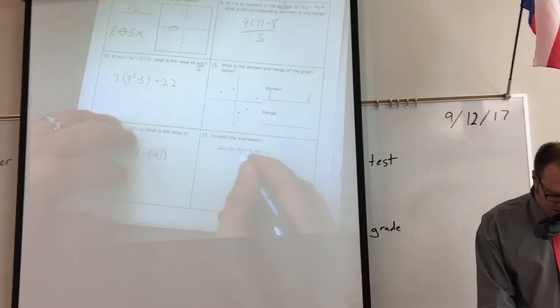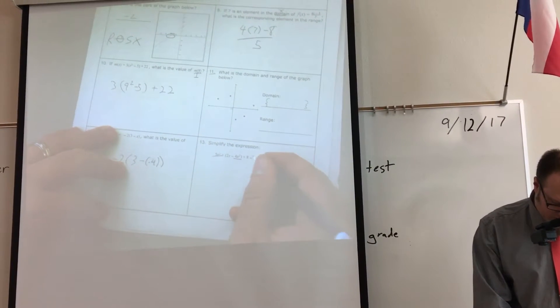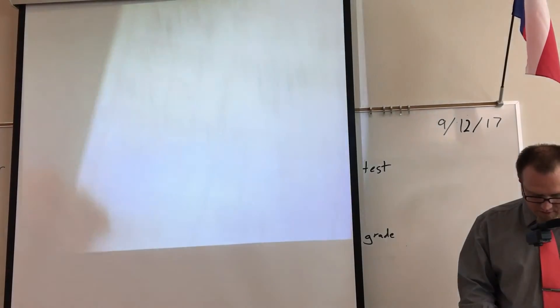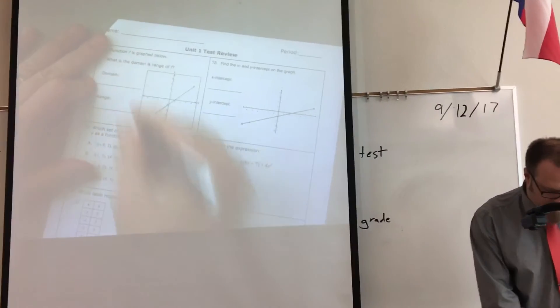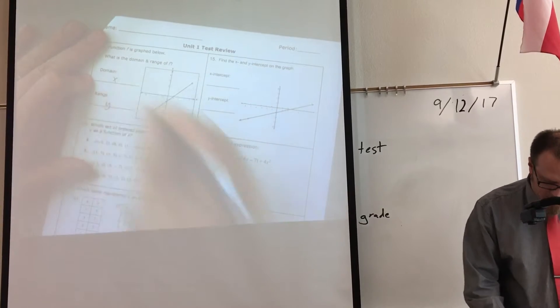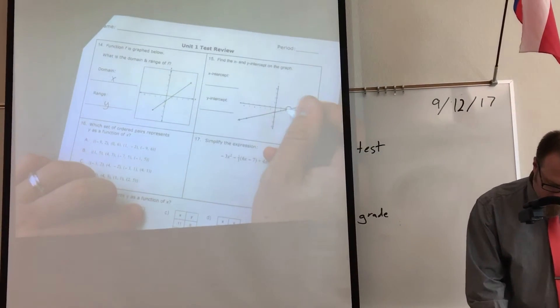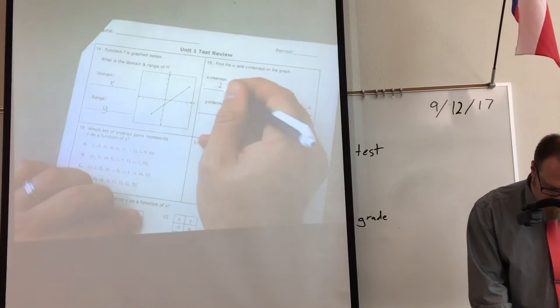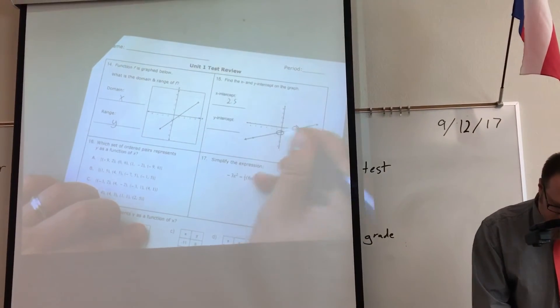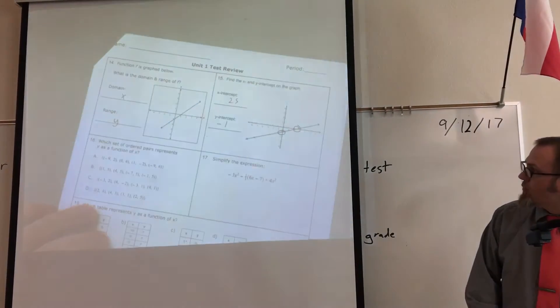Simplify means we're putting together like terms. Don't forget to treat this as a negative one and distribute. On the backside, domain and range. Domain is X. Range is Y. My X-intercept is where I cross the X-axis. It's two and a half. My Y-intercept is where I cross the Y-axis. Negative one.